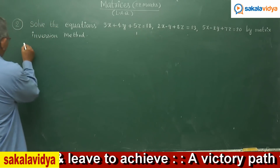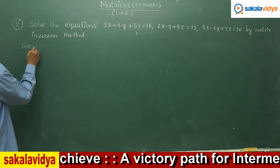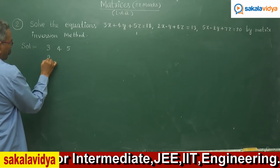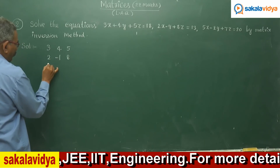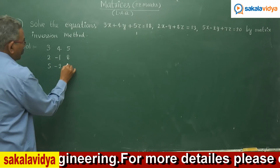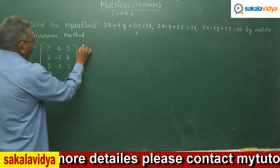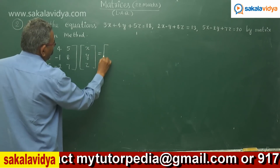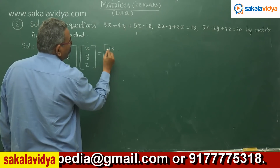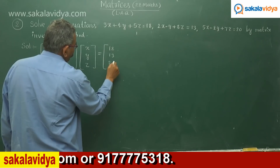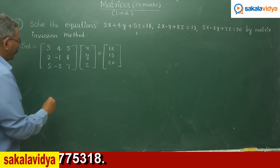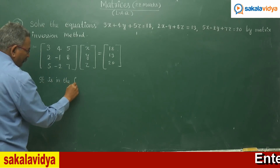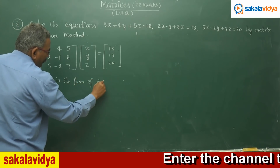This can be written as: the coefficient matrix [3, 4, 5; 2, -1, 8; 5, -2, 7] multiplied by the variable matrix [x; y; z] equals the constant matrix [18; 13; 20]. So now it is in the form A times x equals D.